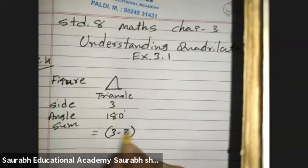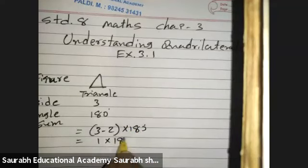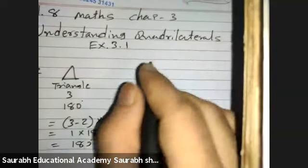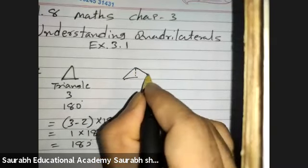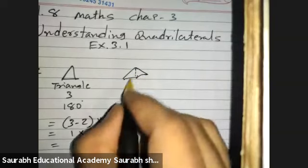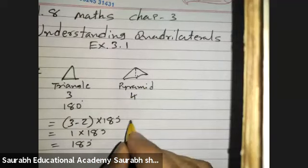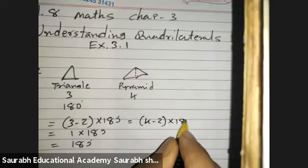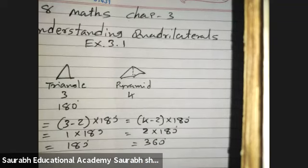A triangle has 3 sides and the angle sum will be 180. How does it arrive? 3 minus 2 into 180, that will be 1 into 180 degrees. Now we have a pyramid shape — it has 4 sides. So, 4 minus 2 into 180, it will be 2 into 180. All the angles total should be 360.